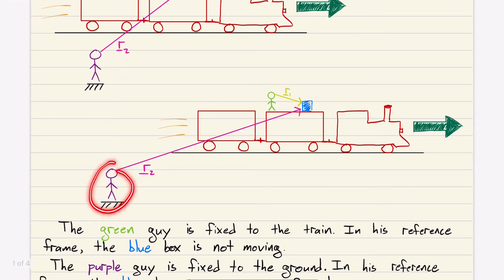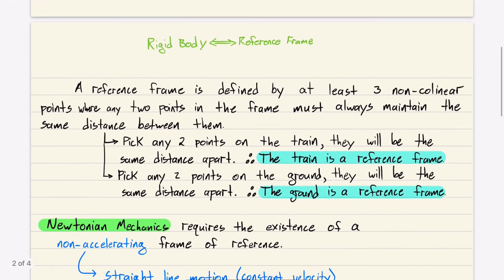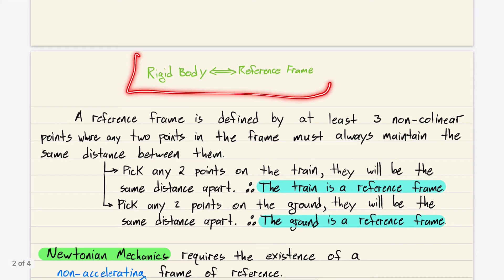This purple guy is fixed to the ground. Take any two points on the ground. After some time later, these points are going to still be the same distance apart from each other. So it's a reference frame.